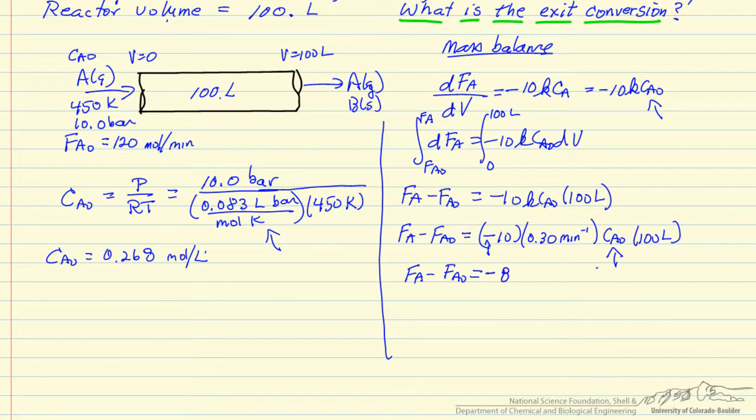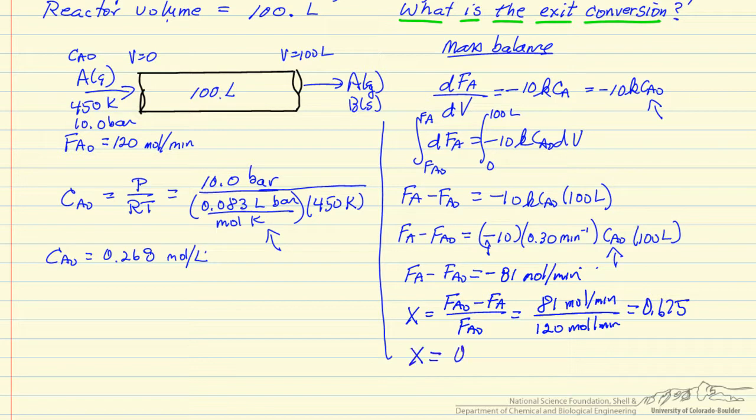It's minus 81 moles per minute. We're interested in the conversion, which is Fa0 minus Fa divided by Fa0. So this is now plus for Fa0 minus Fa over Fa0, which is 120 moles per minute.